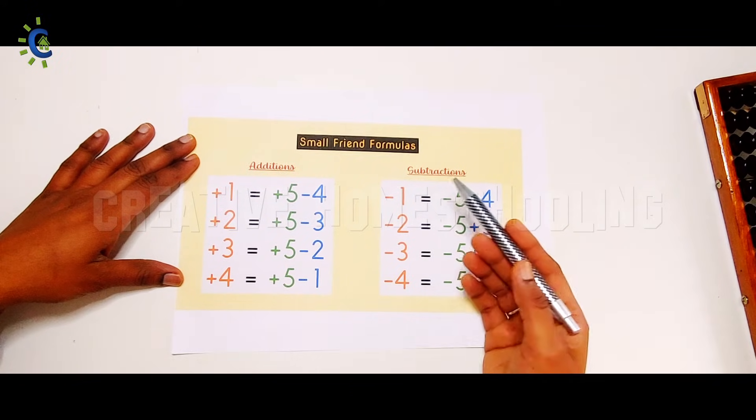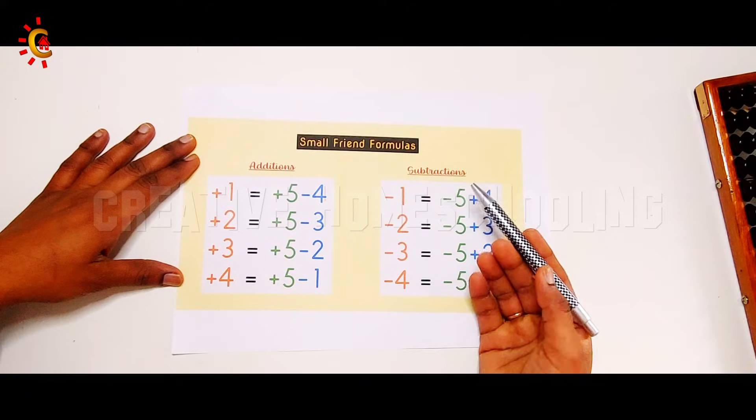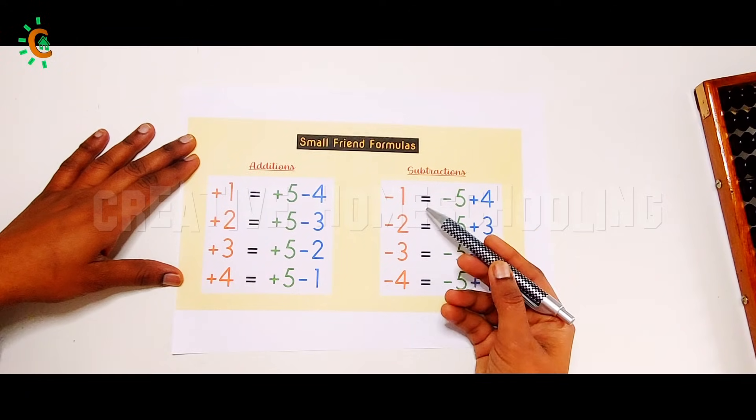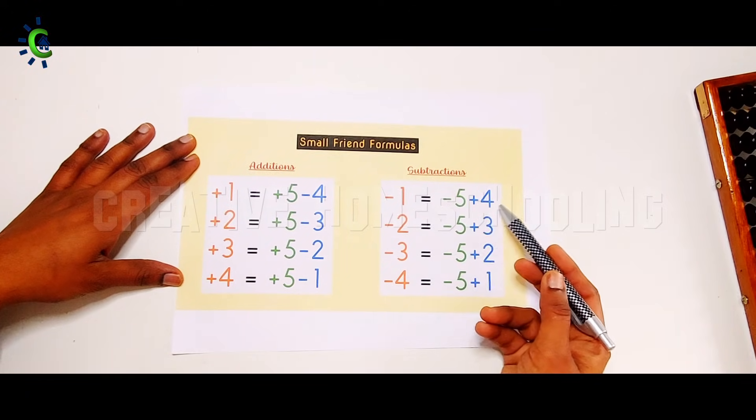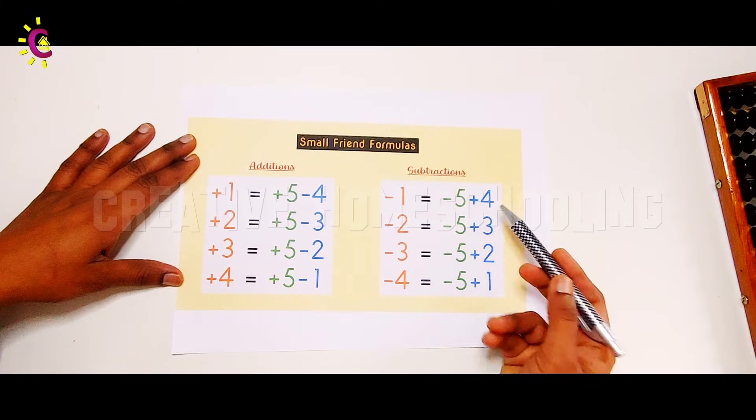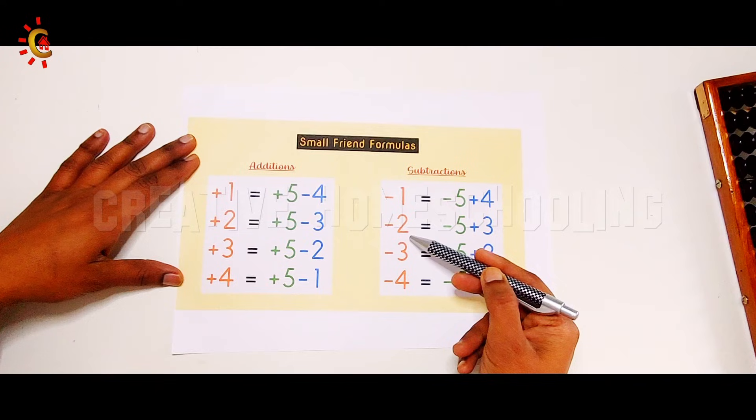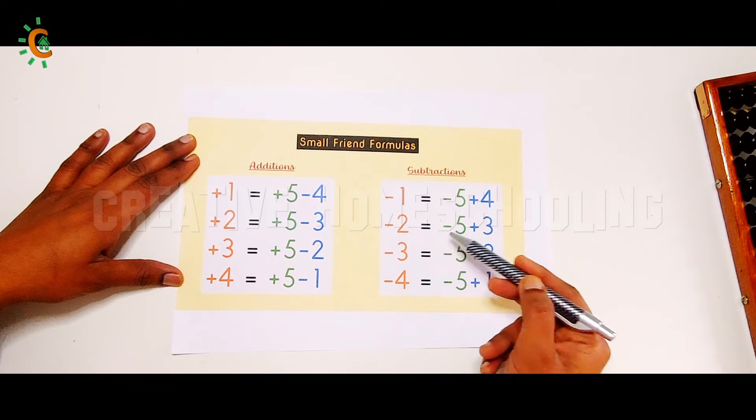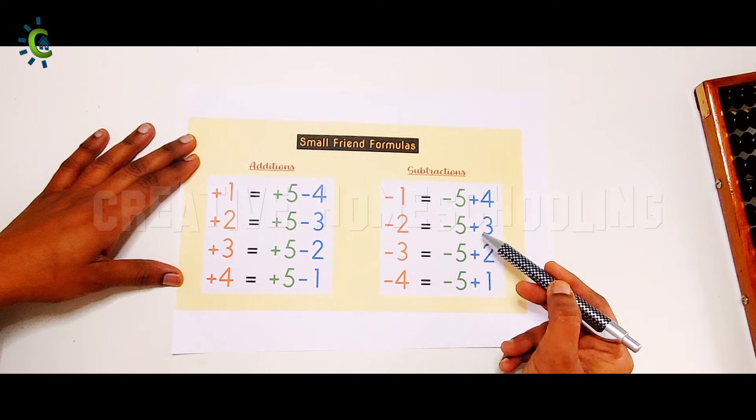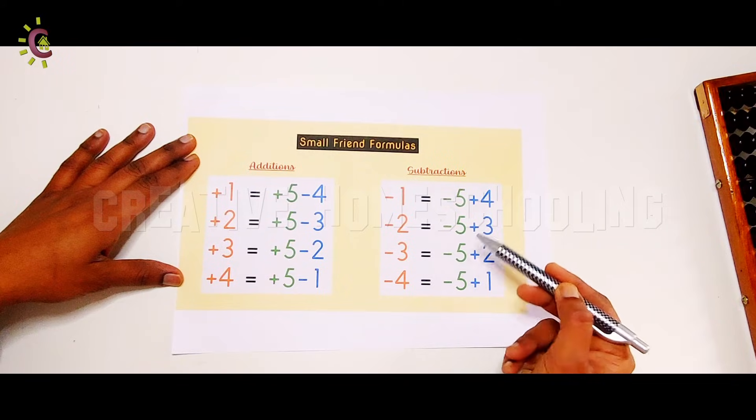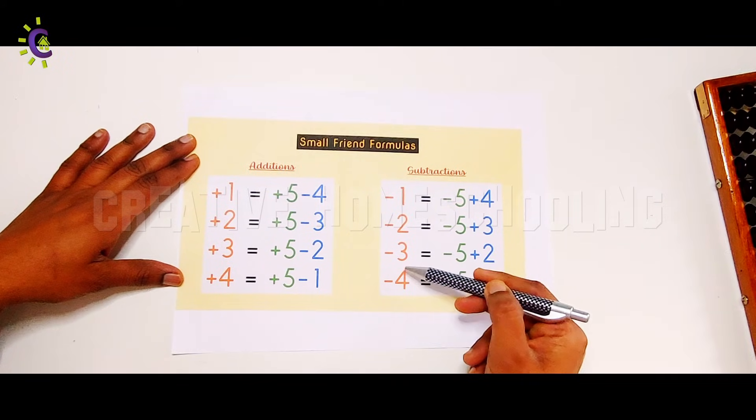Similarly, to subtract one bead, use the formula minus 1 equals minus 5 plus 4. To subtract two beads, we must use the formula minus 2 equals minus 5 plus 3. If we want to subtract three beads, we must use the formula minus 3 equals minus 5 plus 2.